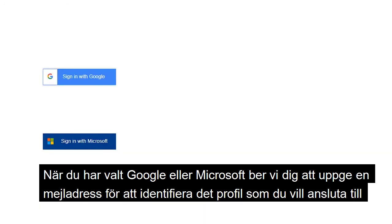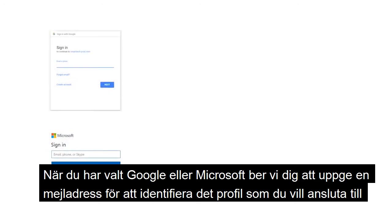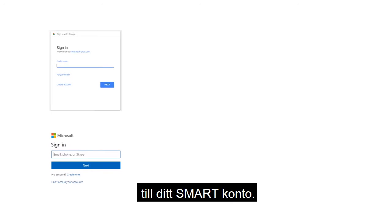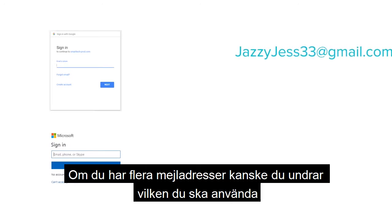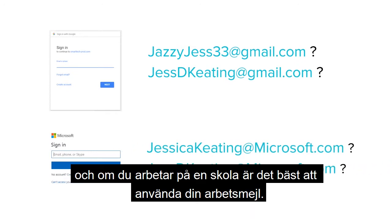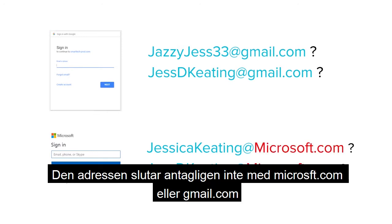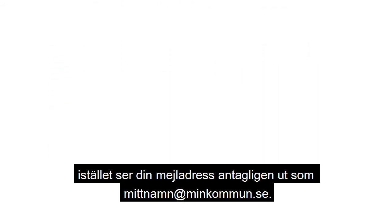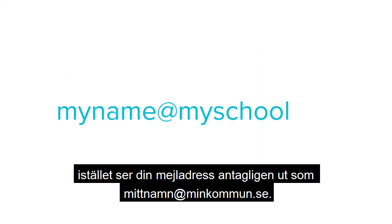After you've selected Google or Microsoft, we'll ask you to enter an email address to identify the profile you want to connect to your Smart account. If you have a number of profiles with both account providers, you might wonder which one to use. If you work at a school, the best email for you to use is actually your professional email address, and that address probably doesn't end at Microsoft.com or Gmail.com. Instead, your address is probably in the format of myname@myschool.org or .net or .edu, whichever extension your organization uses.